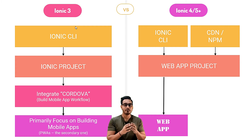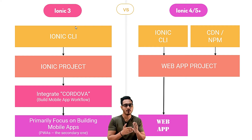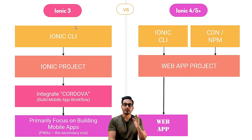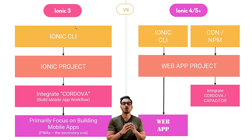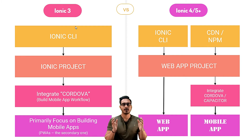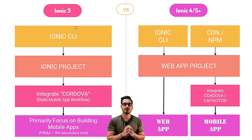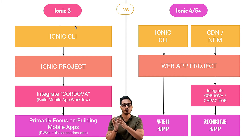The final output from an Ionic 4 web app project can be a desktop app or a PWA. If you want to build mobile applications from the same project, you need to integrate either Capacitor or Cordova in Ionic 4 and above. Using either of those tools, you get your ultimate mobile application with a nice design. That's the whole structure difference between Ionic 3 and Ionic 4 and above.